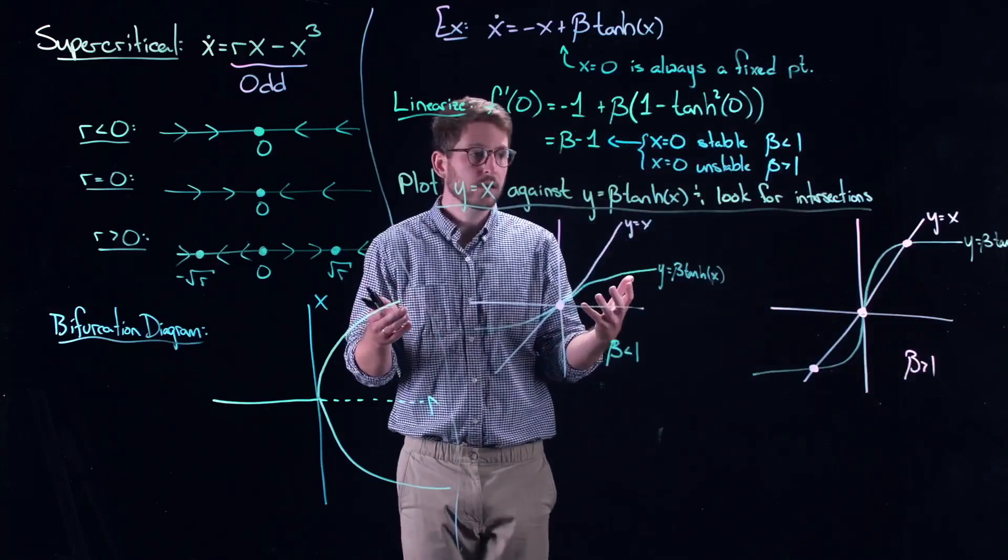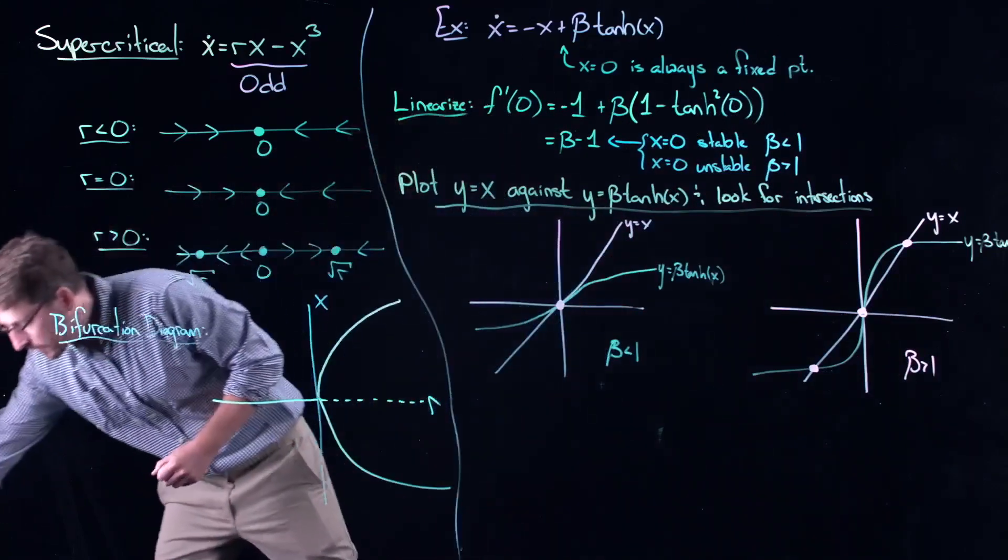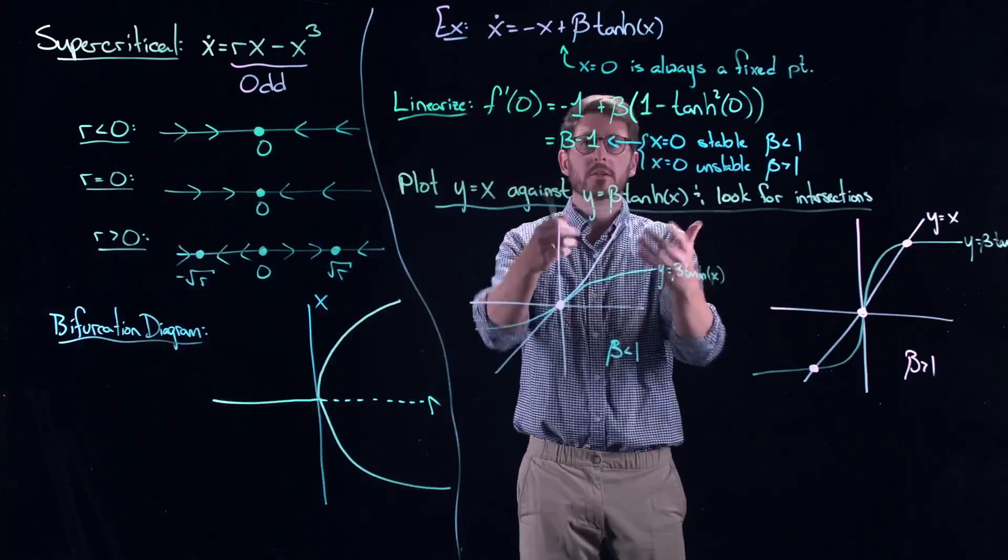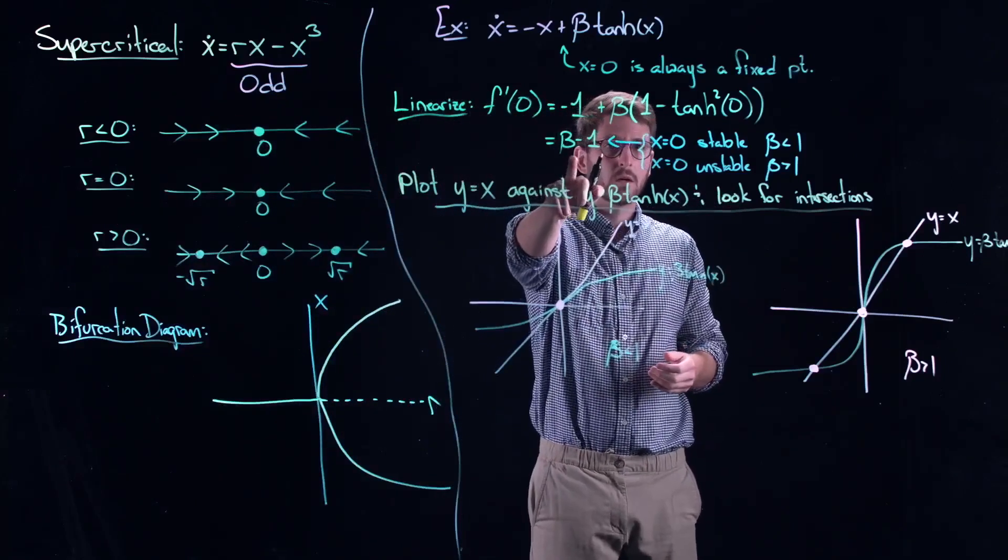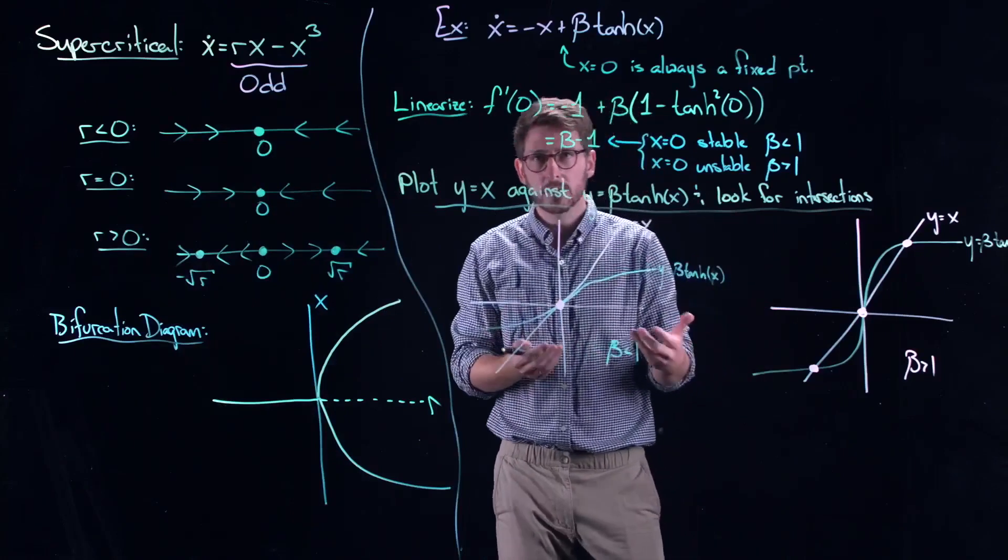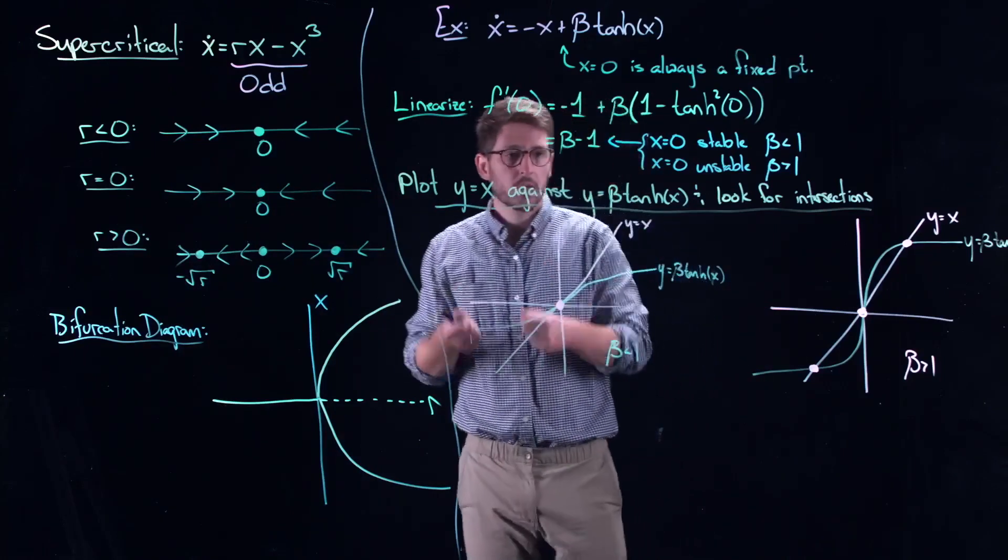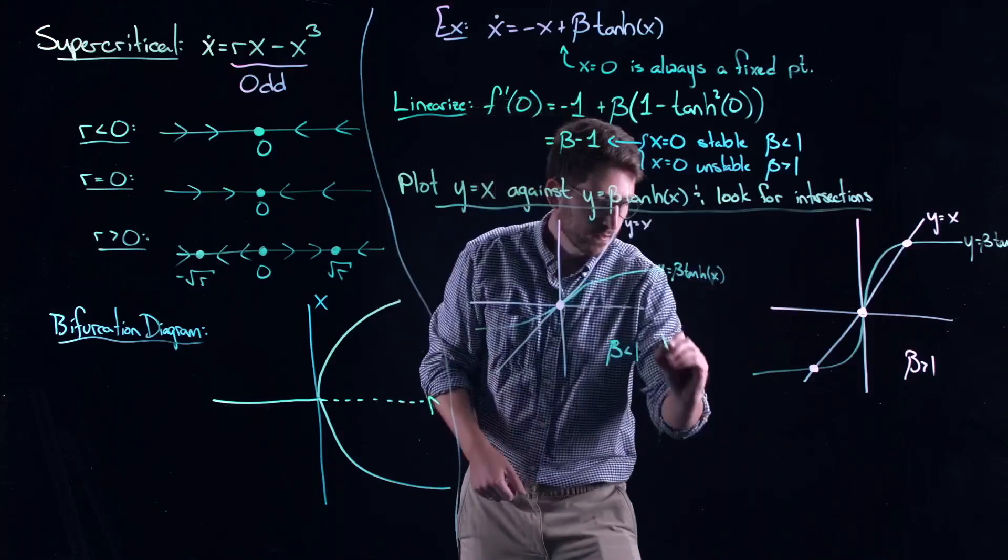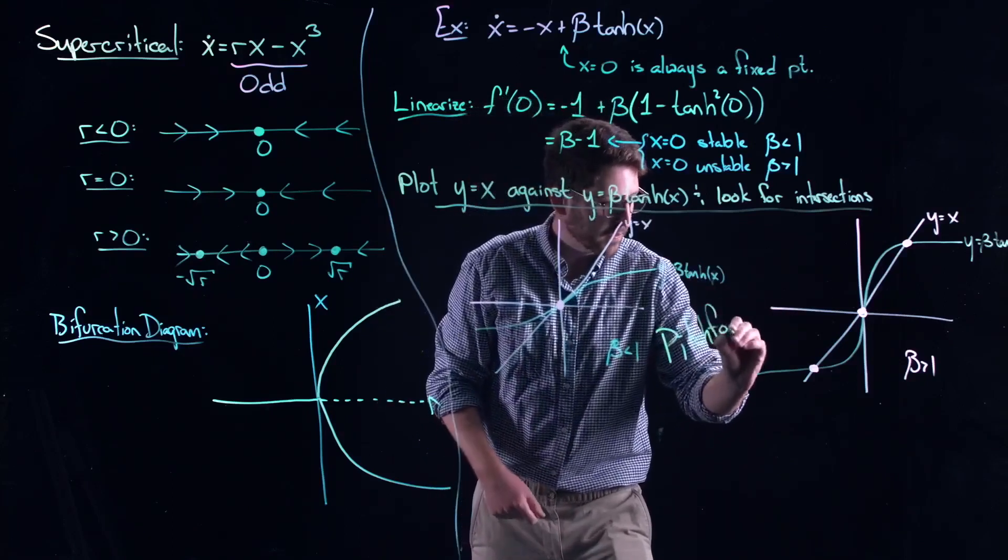And I would get one, two, three fixed points. This is for beta larger than one. So, what does that tell me? It tells me that a pitchfork bifurcation took place. Again, I can do the Taylor series expansion around x equal to zero and beta equal to one. I can do the normal form transformations that I did for transcritical. But here, I just use a simple graphical method and I can see that I've got a pitchfork happening.